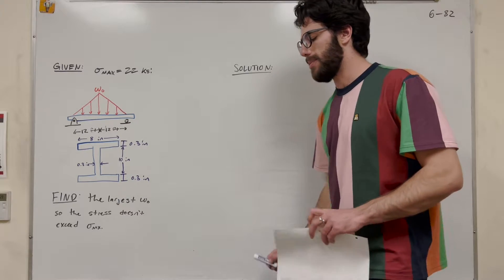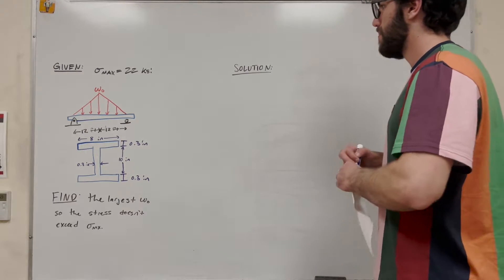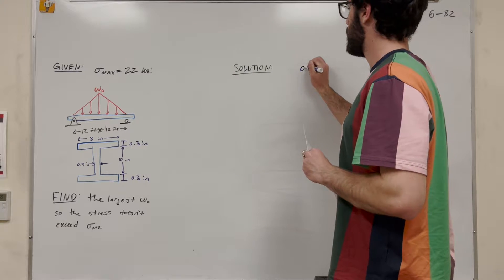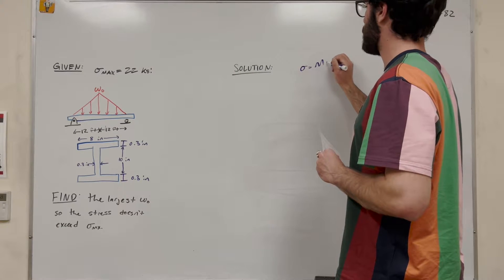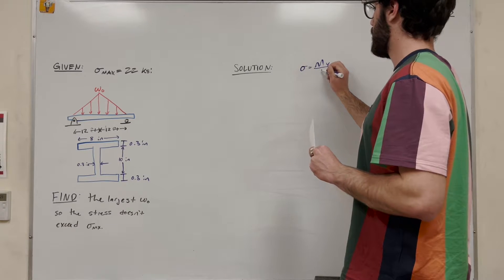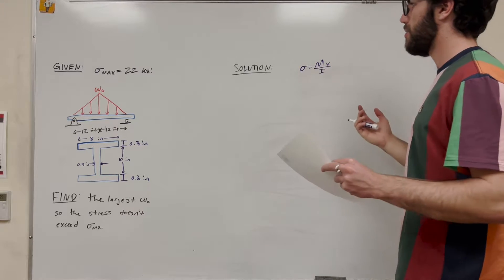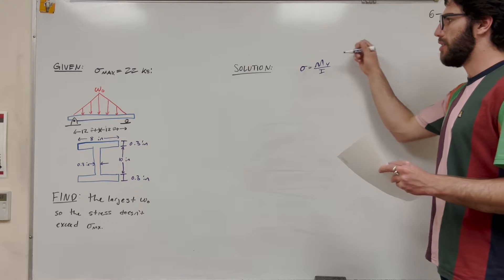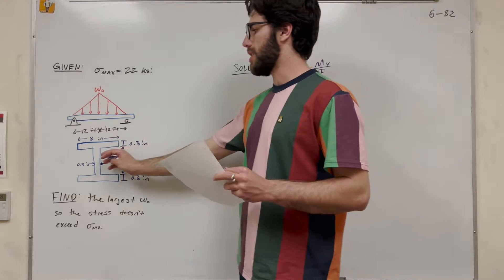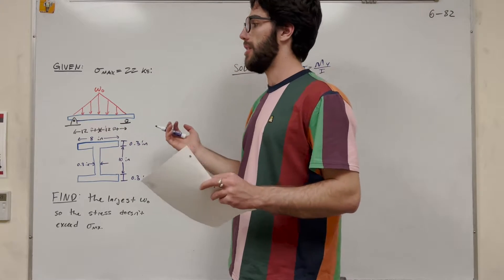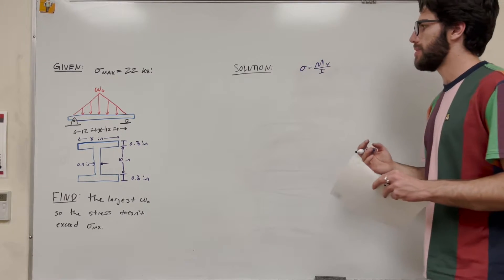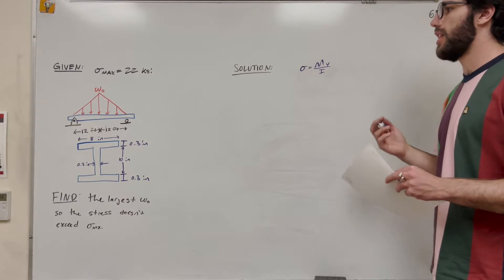We need to find where moment is maximized. We know that bending stress is equal to moment times distance away divided by inertia. The things we don't know are moment and inertia, so we need to figure out where the moment is going to be largest in this beam. To do that, we need to draw a moment body diagram.